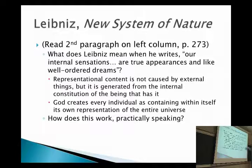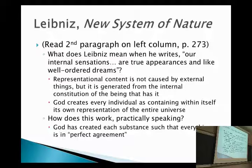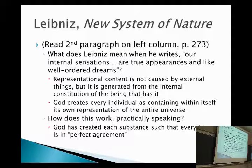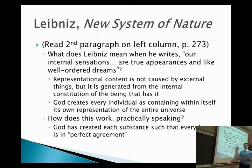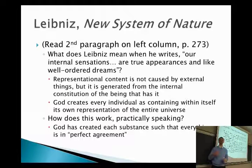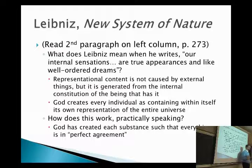If nothing interacts with one another, if everything is generated from within oneself, how does this work practically? God created each and every substance such that everything is in perfect agreement. It's like if you had a bunch of wind-up toys that move and dance around — if you could set those toys up such that they all look like they're participating in some team sport, they don't actually participate together. It's just from their own internal workings that it looks like they have some cooperative thing going on.